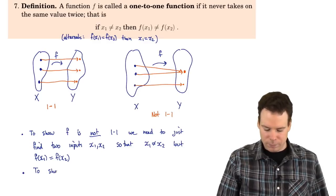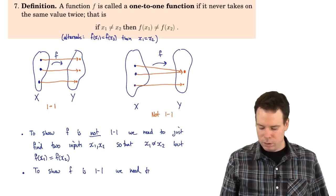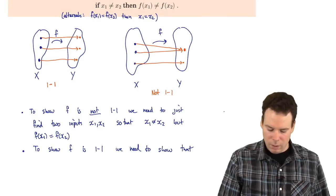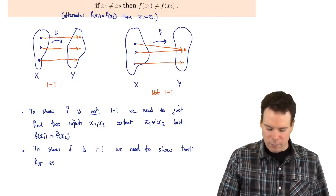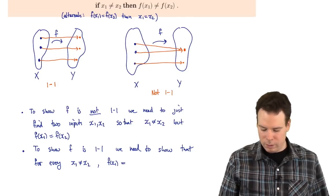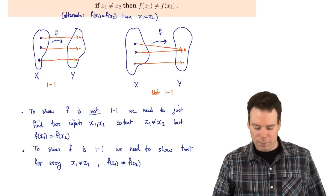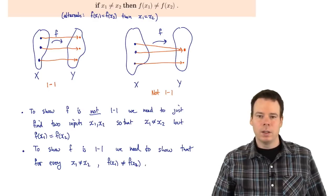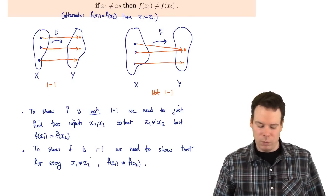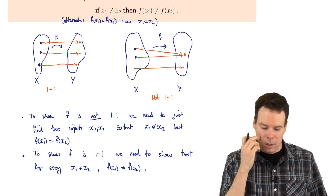On the other hand, to show f is one-to-one, we need to show that for every x₁ not equal to x₂, f(x₁) is not equal to f(x₂). We need to show that for every two inputs that are different, the outputs are different. So we need a much more general argument to show a function is one-to-one. To show it's not one-to-one, we just need an example of a couple of inputs.